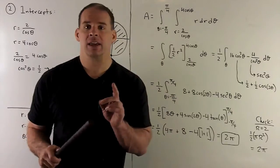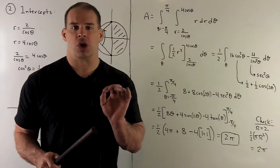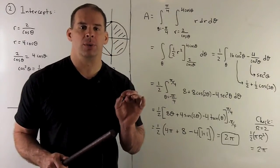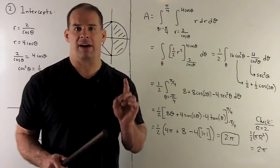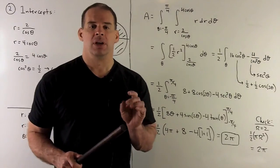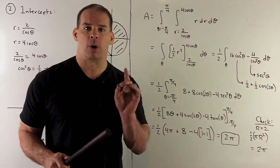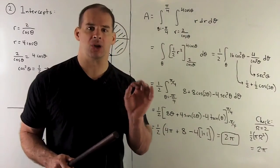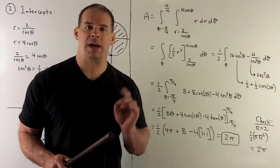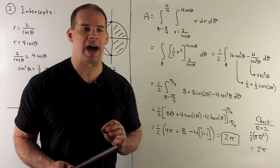Now we have our check. We have a circle of radius 2 and we only want half of it. The area of the whole circle is pi r squared equals 4 pi, so half gives 2 pi — that confirms our answer.